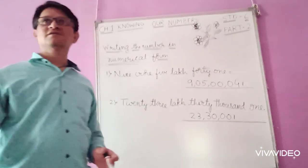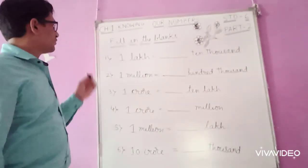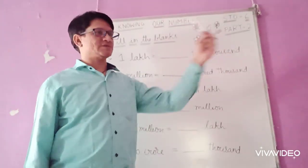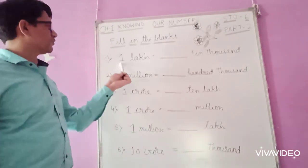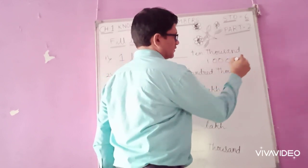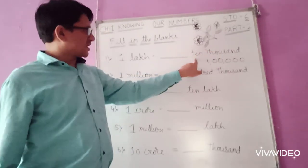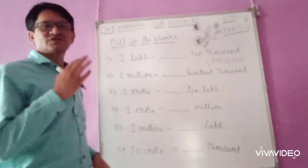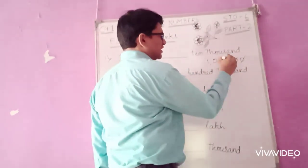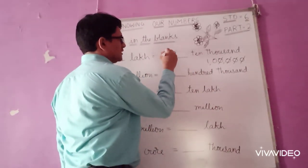Now we will look at relationships between units. One lakh equals how many ten-thousands? One lakh has 5 zeros, ten thousand has 4 zeros, so 5 − 4 = 1, meaning one lakh equals ten ten-thousands.